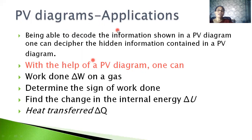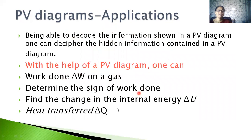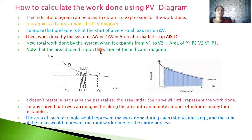Now let's see some of the applications of PV diagrams. Once we are able to decode the information present in a PV diagram, we can find out the work done ΔW on a gas — both its magnitude and sign. We can also find the change in internal energy ΔU, and we can find out the sign of ΔQ, that is heat transferred in a system. Let's see these one by one.